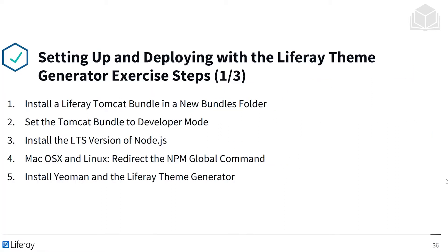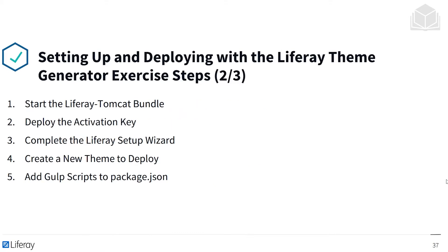We'll be taking the following steps in this exercise. First, you'll install a new Liferay Tomcat bundle in a new bundles folder. You'll set the Tomcat bundle to developer mode, and also install the LTS version of Node.js. If you're on Mac or Linux, you'll redirect the npm global command. You'll install Yeoman and the Liferay theme generator, then start the Liferay Tomcat bundle and deploy the activation key. We'll complete the Liferay setup wizard, create a new theme to deploy, and add gulp scripts to package.json.